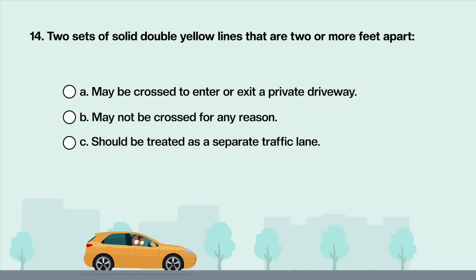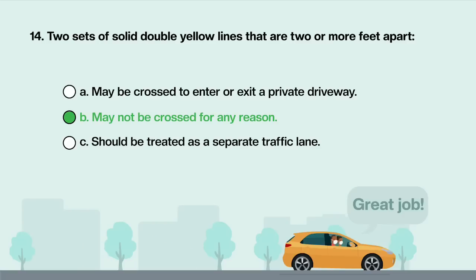Two sets of solid double yellow lines that are two or more feet apart: A. May be crossed to enter or exit a private driveway. B. May not be crossed for any reason. C. Should be treated as a separate traffic lane. Answer is B: May not be crossed for any reason.